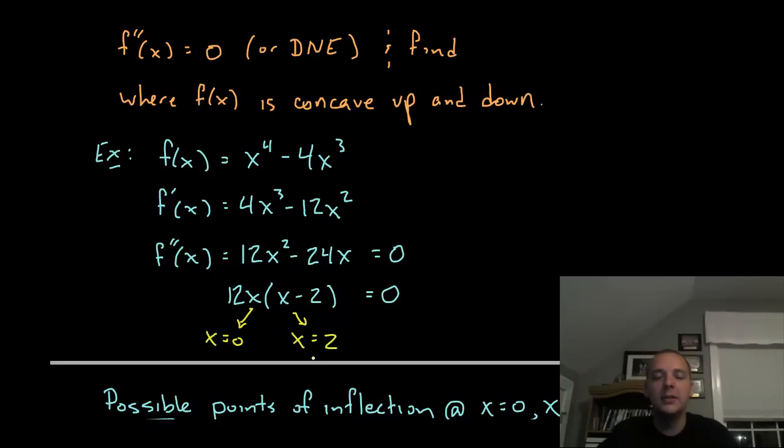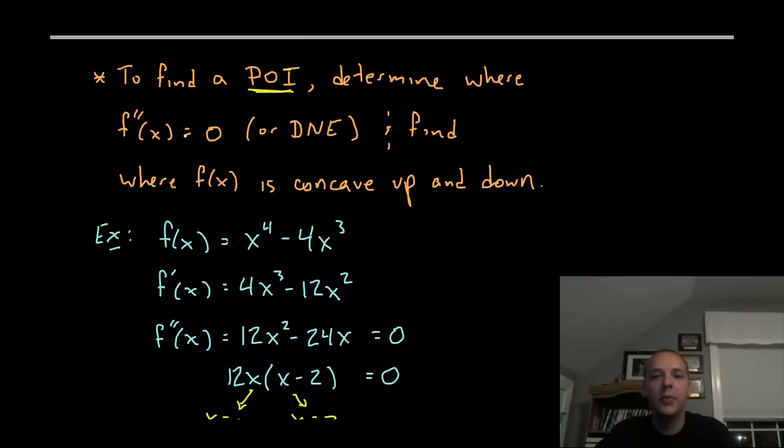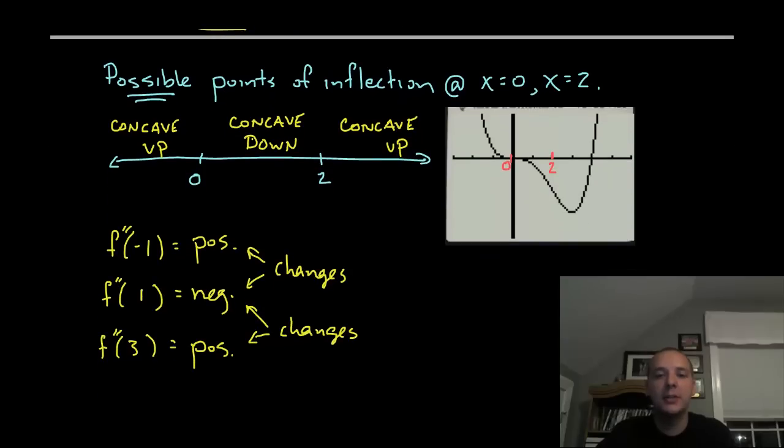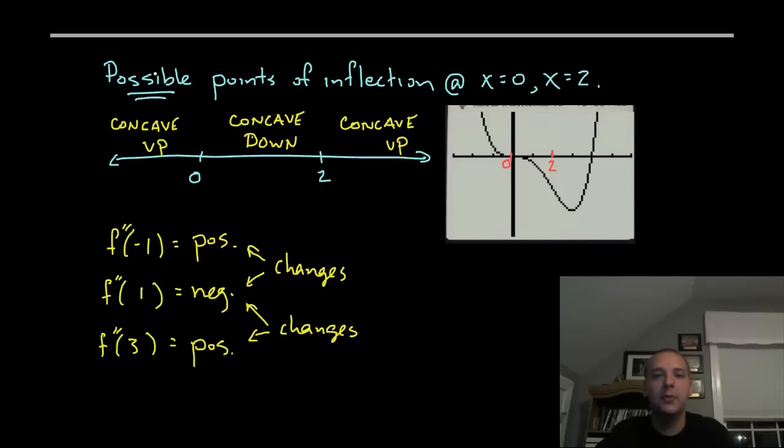Now does this mean that zero and two are 100% points of inflection? No. Those two are places where the second derivative is zero. So you can call them likely points of inflection or what I prefer to say is possible points of inflection. We have possible POIs or points of inflection at zero and two. We have to verify it though.